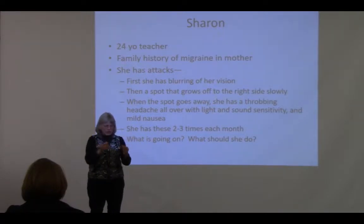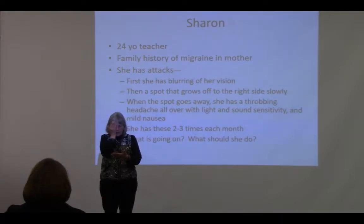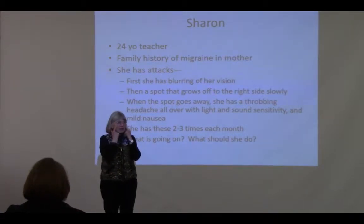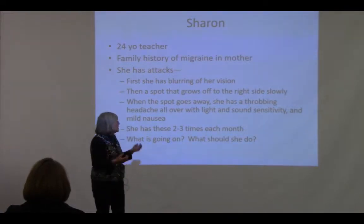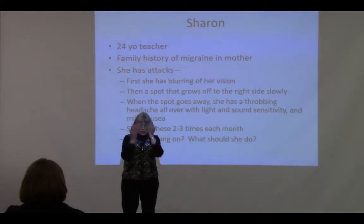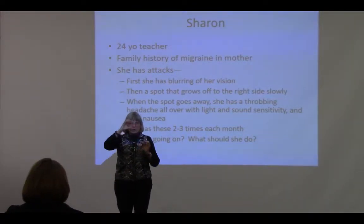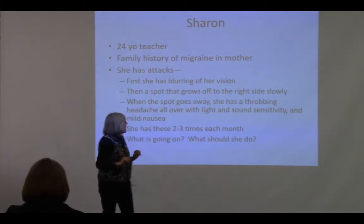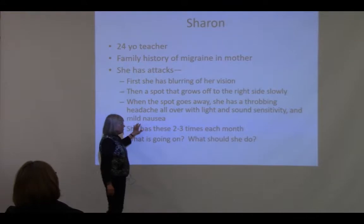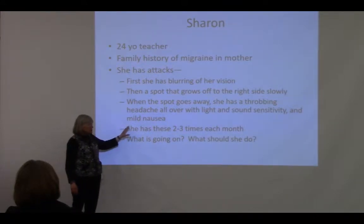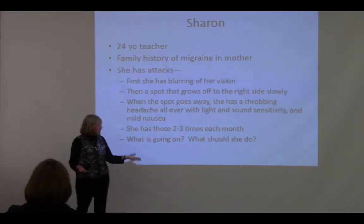I always tell patients to take a book, cover one eye and see the spot, then cover the other eye. If you see the spot with both eyes covered separately, it's in both eyes and coming from the brain. If covering one eye makes the spot disappear, it's coming from that eye. Sharon's spot is in both eyes — it goes off to the right side, gets bigger and bigger, then finally goes away. She then gets a throbbing headache with light and sound sensitivity and mild nausea, about two to three times a month.